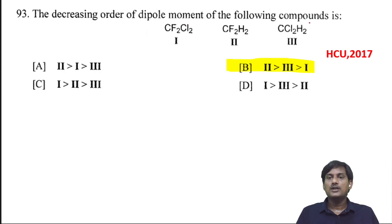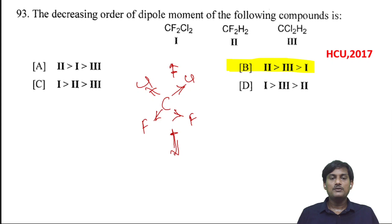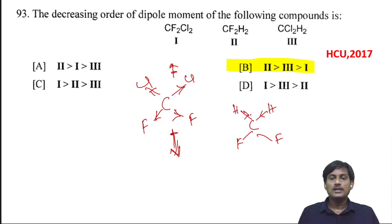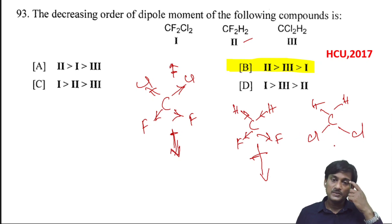The decreasing order of dipole moment of the following compounds: chlorine is more electronegative than carbon, so the bond polarity is towards chlorine. In some structures there is cancellation of dipole moments. In one structure with chlorine and chlorine on one side and hydrogen and hydrogen on the other, the net dipole moment is greater. Comparing all structures, the order is: second > third > first > fourth. The correct answer is option V.